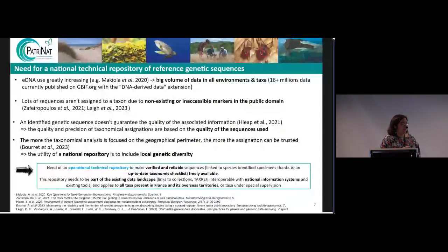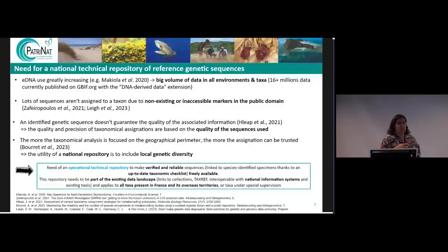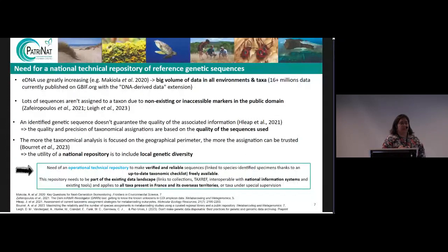All of this makes a national technical repository of reference genetic sequences really needed. eDNA use is greatly increasing, so we will have big volumes of data across all environments and taxa. Markers are sometimes non-existing or inaccessible in the public domain, which can be unfair. We also need sequences of really good quality, and a national repository could be useful to include local genetic diversity to better identify sequences from certain territories.